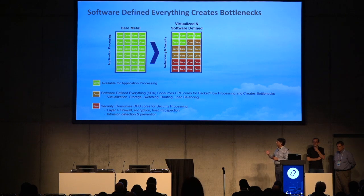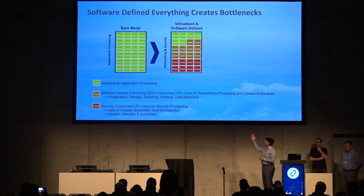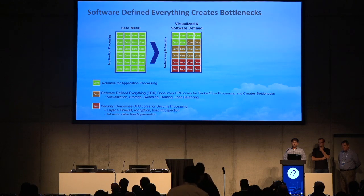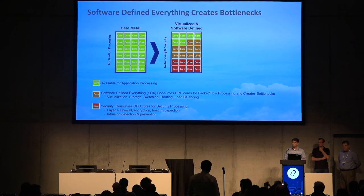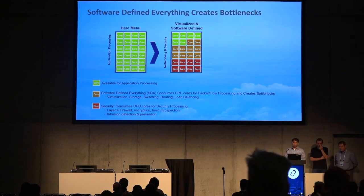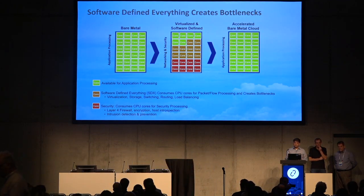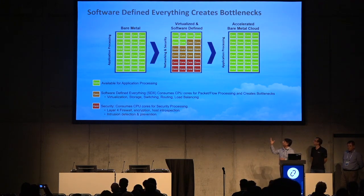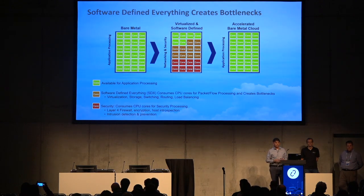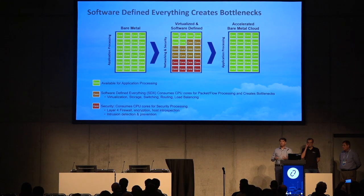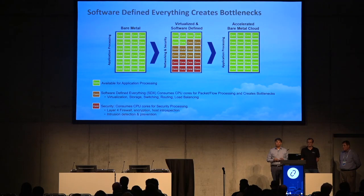However, as we add virtualization, software-defined security, software-defined storage, and software-defined networking, a lot of CPU cores get consumed for packet processing, protocols, and overlay networking. You end up with very few cores available for running your applications, VNFs, and containerized workloads — that's not really scalable. Going from bare-metal to the software-defined world means you sacrifice performance and efficiency, defeating the purpose of going software-defined in the first place.